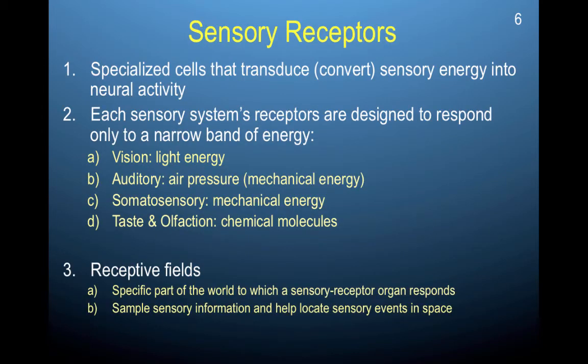Sensory receptors are specialized cells that transduce or convert sensory energy into neural activity. Each sensory system's receptors are designed to respond to only a narrow band of energy: for vision it is light energy, for auditory it's air pressure or mechanical energy, for somatosensory it's also mechanical energy, and for taste and olfaction it's chemical molecules. When we talk about each receptor having its own receptive field, that is the specific part of the world to which a sensory receptor organ responds — for visual information, a receptive field could be a particular point in space; for auditory information, it could be a particular frequency. These receptive fields allow you to sample and locate sensory information events in space.